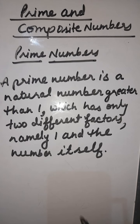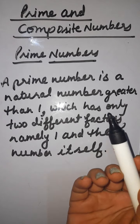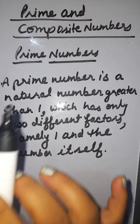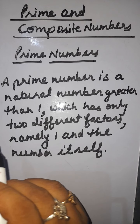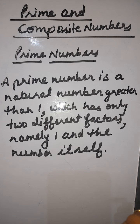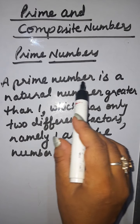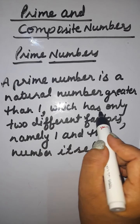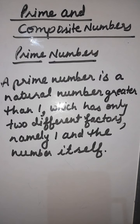Next are prime and composite numbers. This is very important because next you will learn about prime factorization, so understand this first. What are prime numbers? A prime number is a natural number greater than 1 which has only 2 different factors, namely 1 and the number itself.